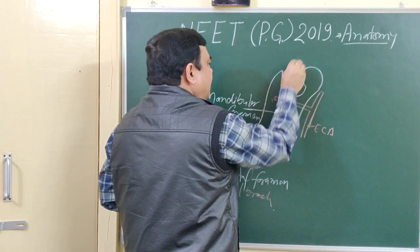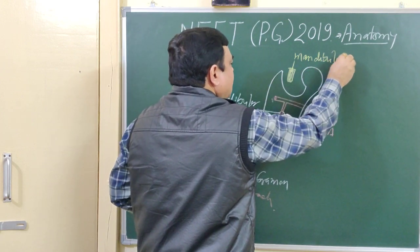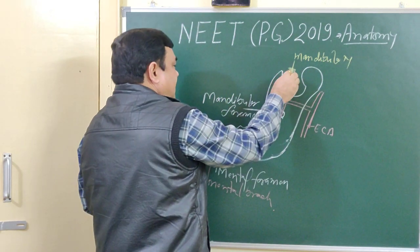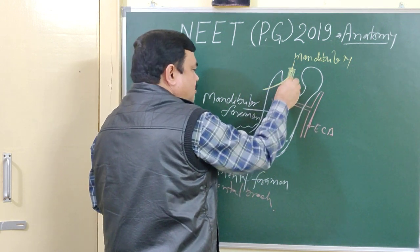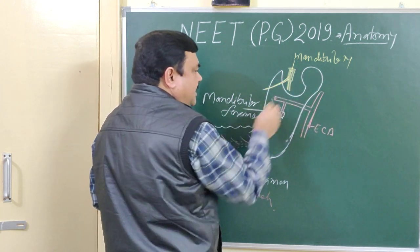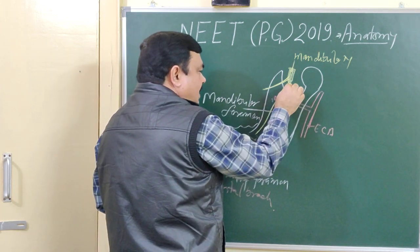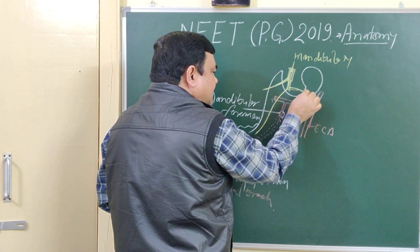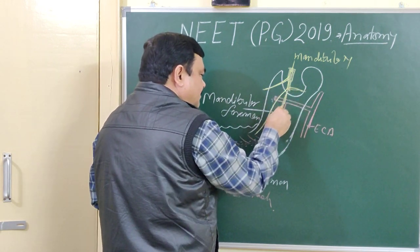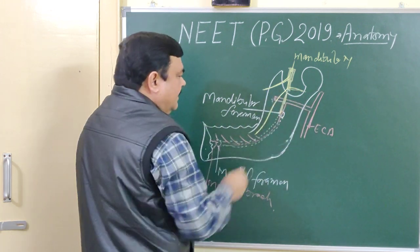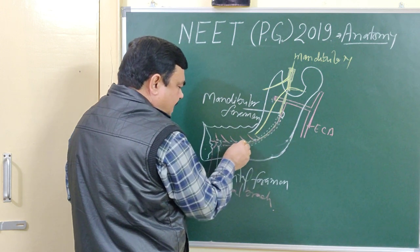This is the mandibular nerve. This is the inferior alveolar. It gives branches from the posterior division. This posterior division gives three branches: one branch is the lingual branch, another branch is the auriculotemporal branch, and this branch — the inferior alveolar branch — passes through the mandibular foramen. This is the inferior alveolar branch.